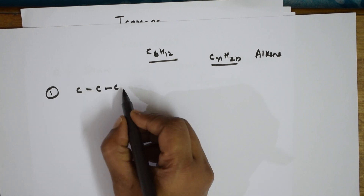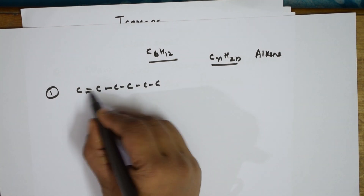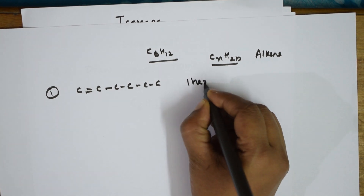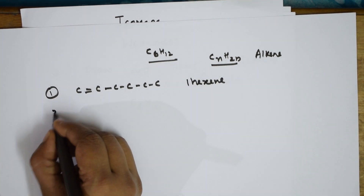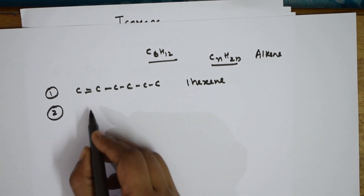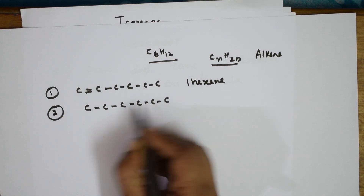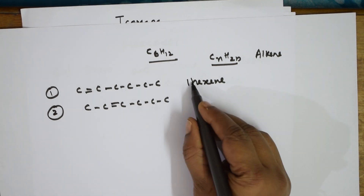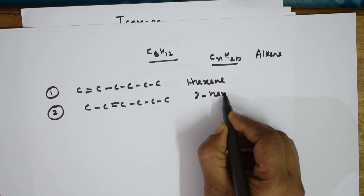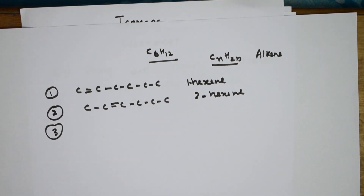Draw carbons 1, 2, 3, 4, 5, 6 with the double bond at position one — name it 1-hexene. Now shift the double bond to the second position: 1, 2, 3, 4, 5, 6 — this becomes 2-hexene. That's the second isomer.